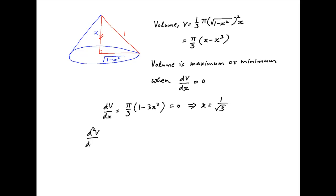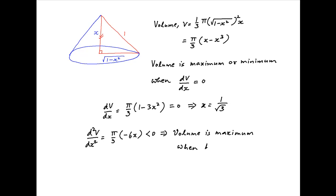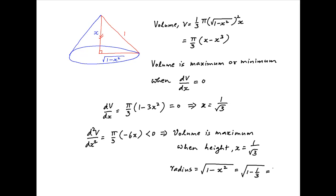The second derivative of V with respect to x is equal to π/3 times (minus 6x), which is clearly negative. This implies that the volume is maximized when the height of the cone x is equal to 1/√3. Therefore the radius of the base, which equals √(1 minus x²), is equal to √(1 minus 1/3), which is equal to √(2/3).